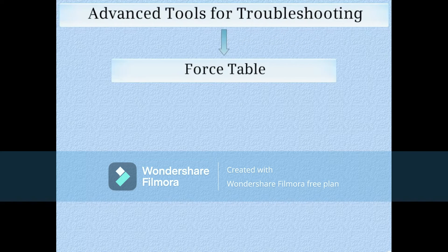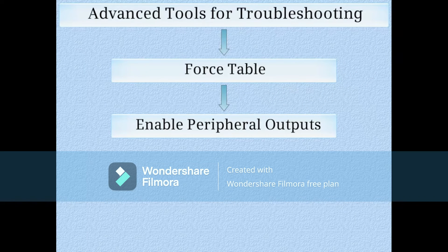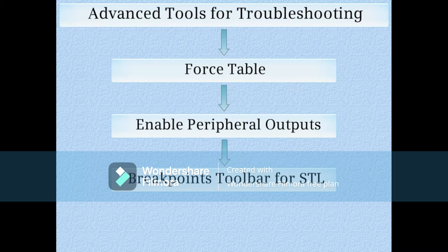While online, double-click a station to bring up its module information tool. Some advanced tools for troubleshooting include the force table, which allows you to overwrite input or output values regardless of their real-world state; enabling peripheral outputs, which allows you to communicate with outputs even if the CPU is in stop mode; a breakpoint toolbar where you can set breakpoints and monitor code stepwise; and statement lists, also called STL. There are videos which show in detail how to use all of the tools mentioned in this video. This concludes the introduction to errors.